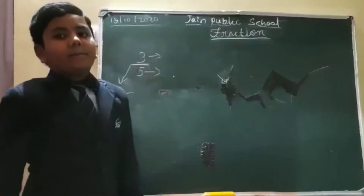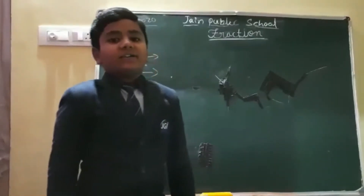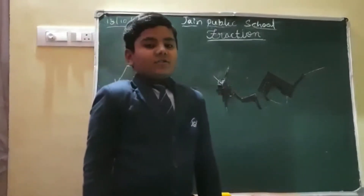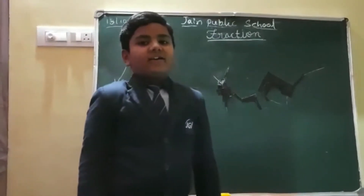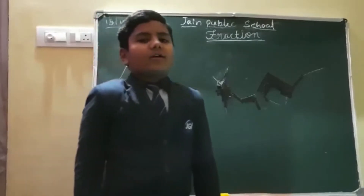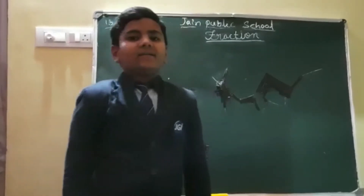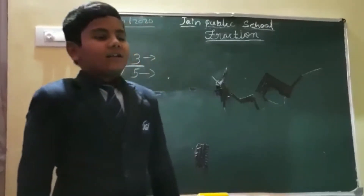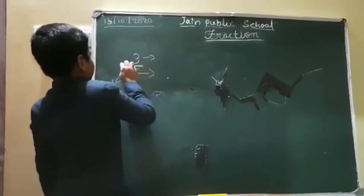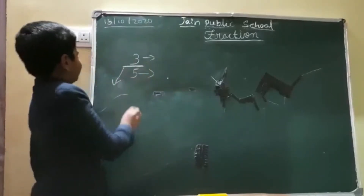When the number is in the upper part, it is called the numerator. When the number is in the lower part, it is called the denominator. And this line is called the fraction bar.